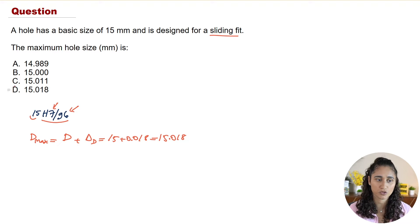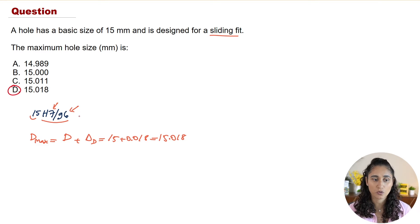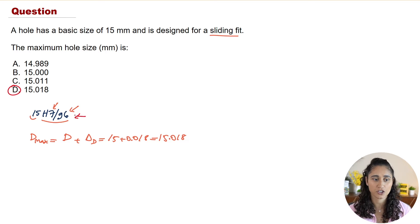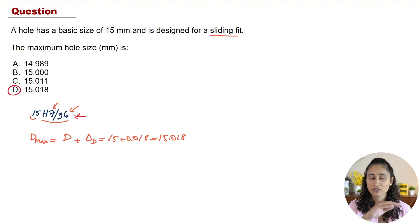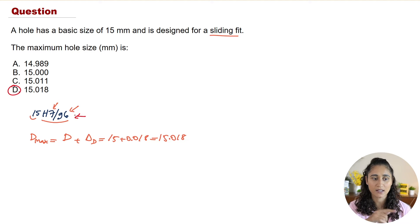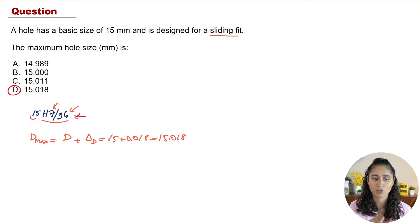So we do 15 plus 0.018, which gives us 15.018. Looking at the answer choices, the answer is D. Make sure you add this to your cheat sheet — once you understand the process, the rest is straightforward. Next, we'll go over the minimum diameter for the hole and the limit sizes for the shaft.